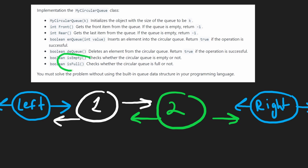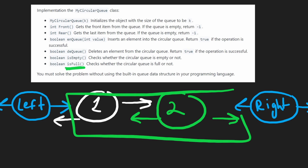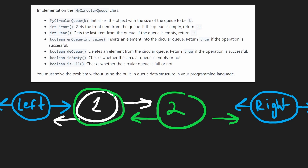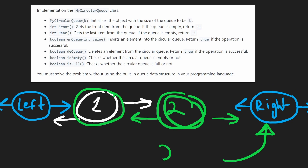The operations like isEmpty and isFull are going to be pretty simple. For isFull we just keep track of a counter — if we've reached our capacity, the function is easy to determine. For front, if the queue is empty we return negative one; otherwise we look at self.left, get the next node, and return the value of it. For rear, we do the opposite: look at self.right, get the previous node, and return its value.